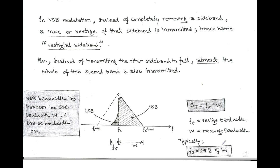The transmission bandwidth of vestigial sideband lies between the bandwidth of SSB, which is W, and the bandwidth of double sideband suppressed carrier, which is 2W. So the transmission bandwidth equals Fv plus W, where Fv is the vestige bandwidth and W is the message bandwidth.